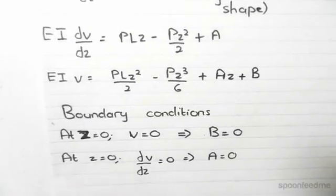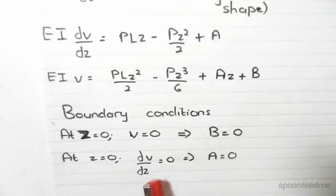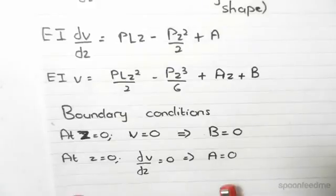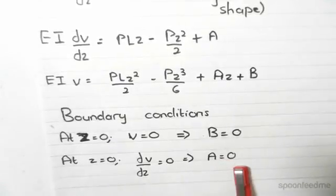Our second boundary condition is at z = 0, the slope of deflection is also equal to zero, so dv/dz = 0. This immediately gives us A = 0.